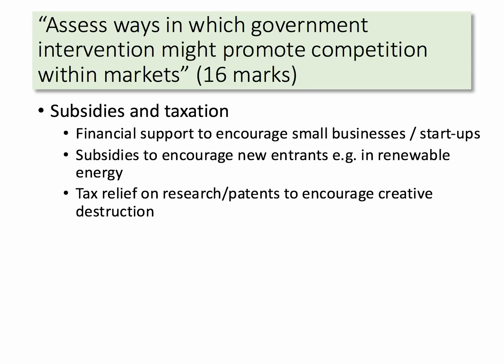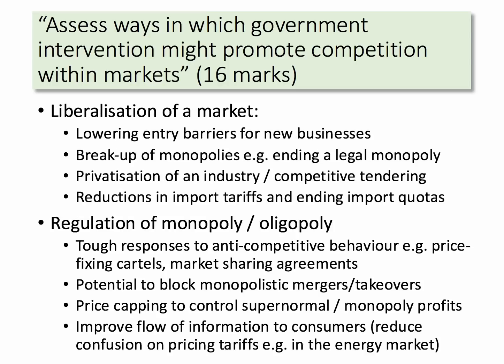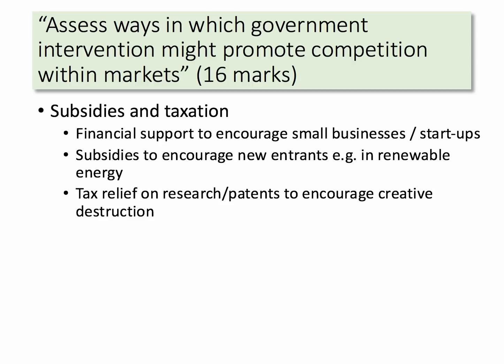A third way in which governments could intervene would be to use subsidies and taxation. For example, financial support to encourage small businesses and start-ups to inject some fresh competition in markets. Maybe a subsidy to encourage a new entrant, for example in renewable energy. And perhaps tax relief on research and patents to encourage innovation, to encourage creative destruction — the emergence of new businesses and new products, which could often be a catalyst for more competition in markets. So taken as a whole, I've gone through three main ways: liberalisation, regulation, and subsidy and taxation.